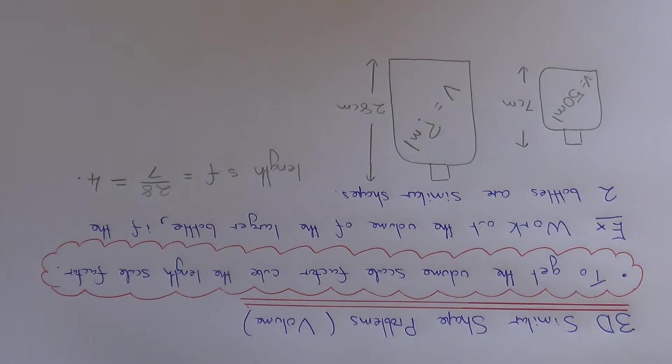So this tells us that the lengths of the larger bottle are 4 times the lengths of the smaller bottle. However this does not mean that the volume is 4 times as big as the smaller bottle.